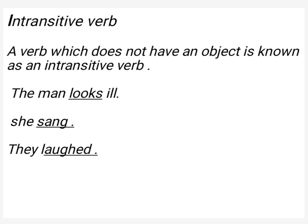Example: 'The man looks ill.' یہاں 'the man' subject ہے، 'looks' verb ہے، لیکن کوئی object نہیں، اس لئے 'looks' intransitive verb ہے۔ 'She sang.' Sang intransitive verb ہے کیونکہ اس میں کوئی object موجود نہیں۔ Next example: 'They laughed.'